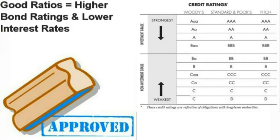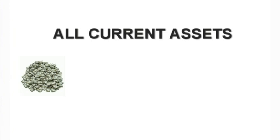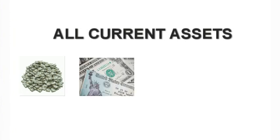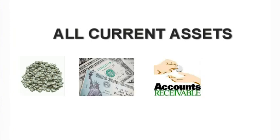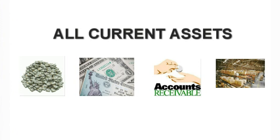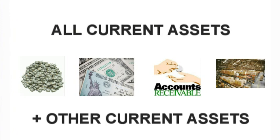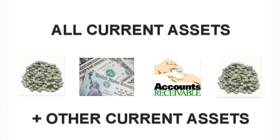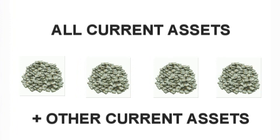Another important thing to consider is that the current ratio uses all current assets. This includes cash and cash equivalents, marketable securities, accounts receivable, inventories, and other current assets. In theory, these assets can all easily be converted into cash. However, in reality, this isn't always true.